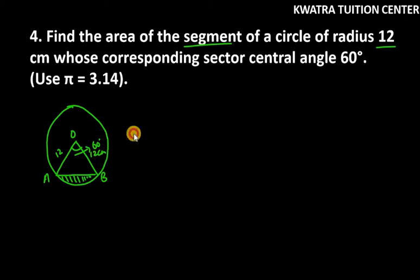So if it is 12 cm then OA will be equal to OB, and if OA and OB are equal then this triangle is an isosceles triangle. The base angles will be equal, that means angle A is equal to angle B.